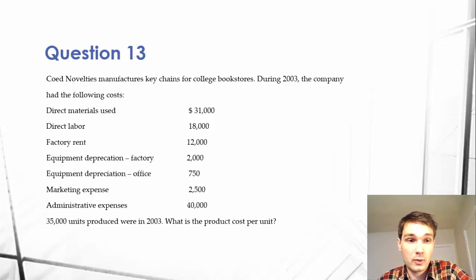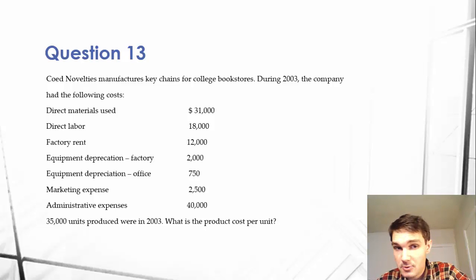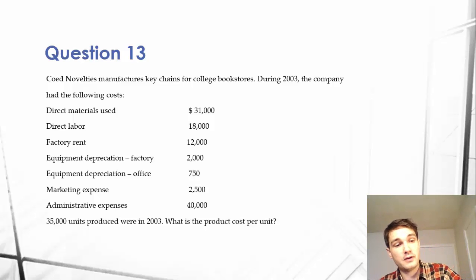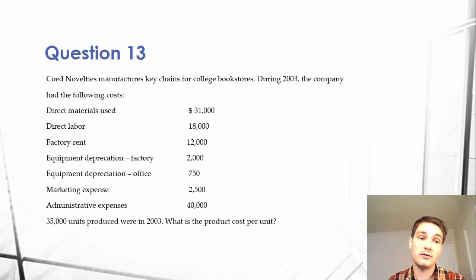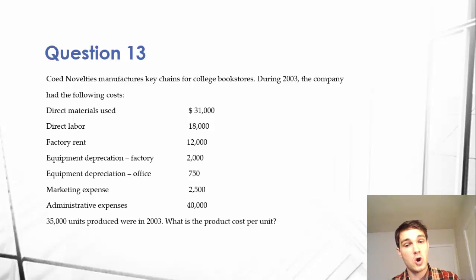It gives us direct materials used, direct labor, factory rent, equipment depreciation on factory and office, marketing expenses, and administration expenses. Then it tells us 35,000 units were produced. What is the product cost per unit?